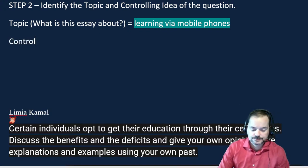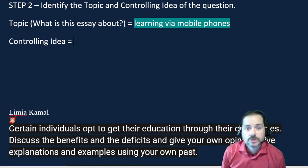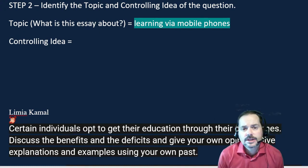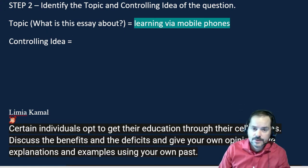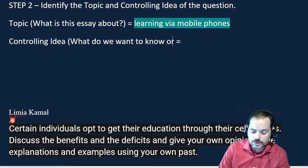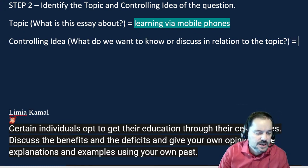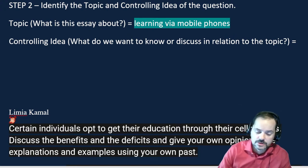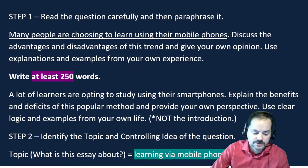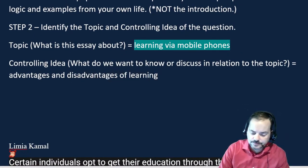The controlling idea is what we want to know or discuss in relation to the topic — basically the rest of the question. Here, clearly, it's the advantages and disadvantages of learning via mobile phones. Always think about the original question: the controlling idea is advantages and disadvantages of learning with a mobile phone.